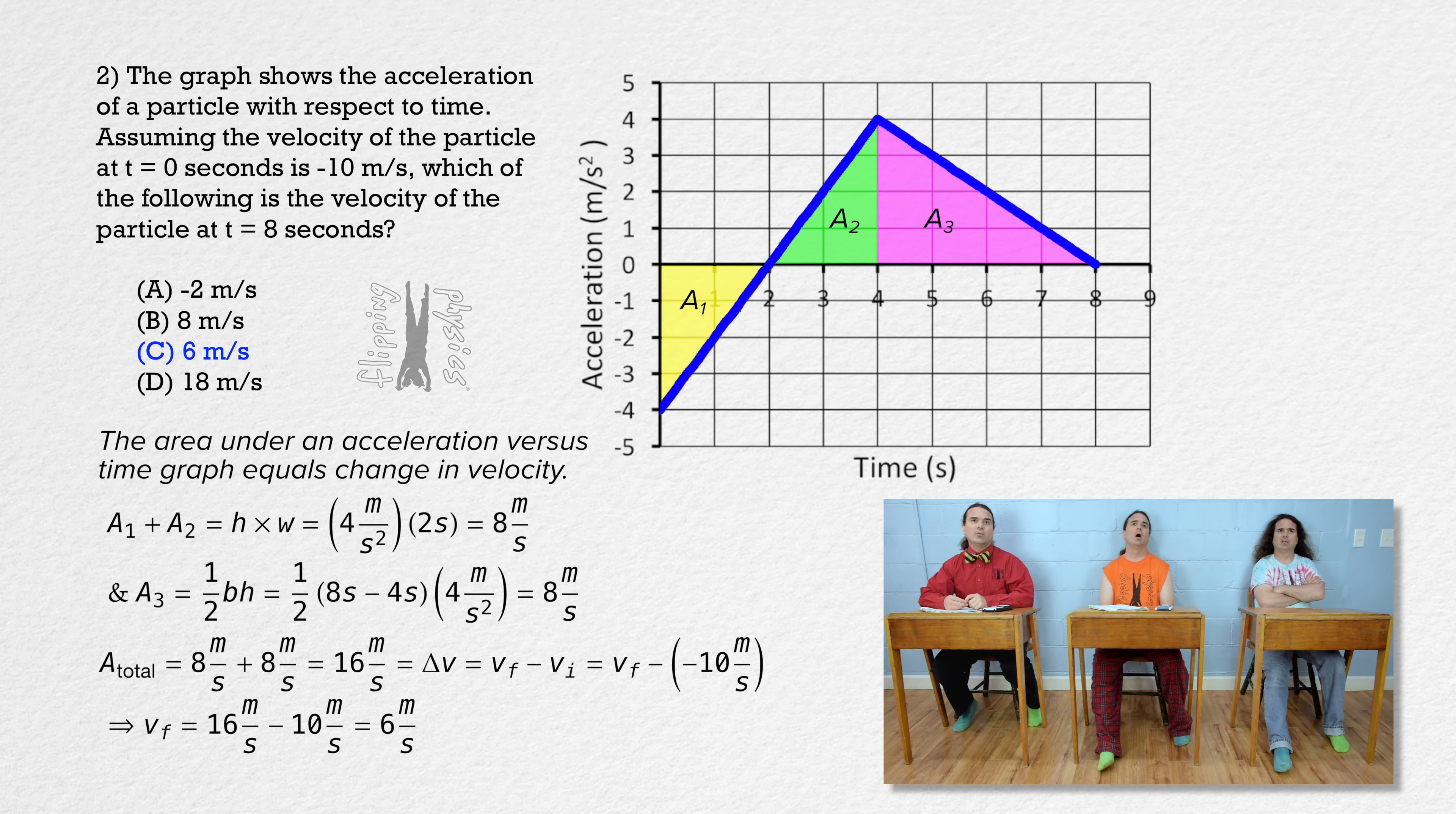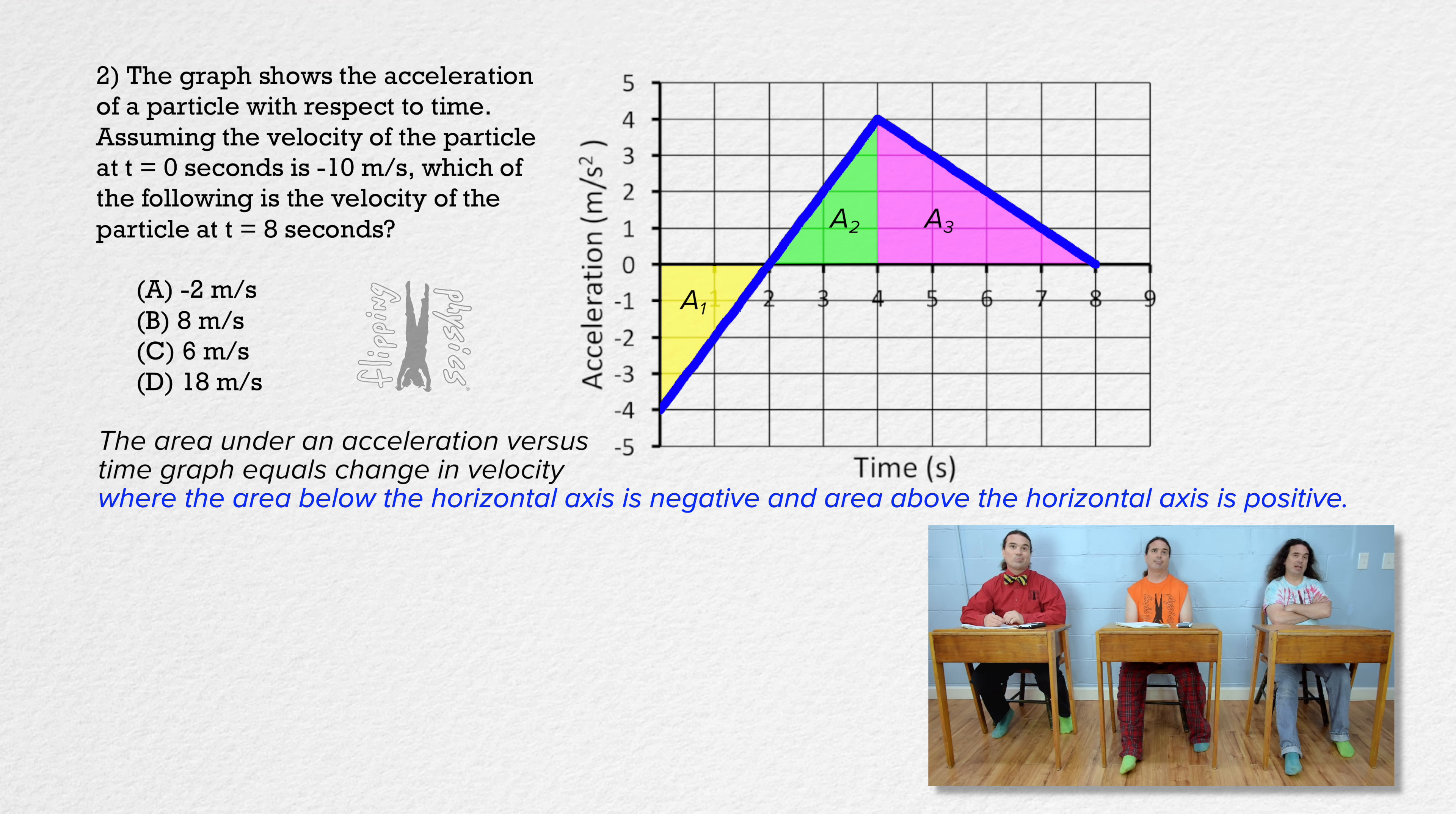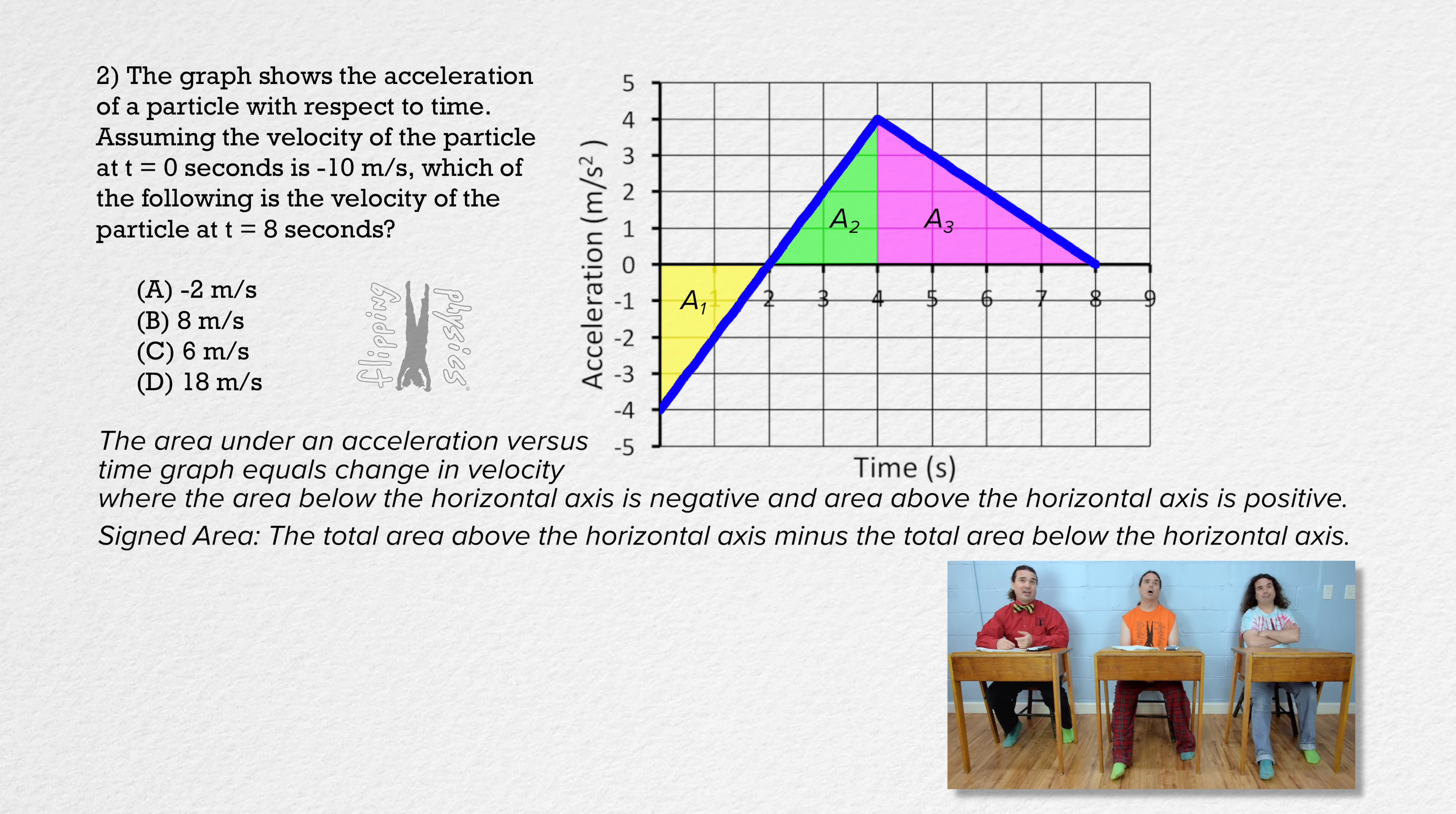Wait. Remember, it is the area under the curve. Under. I forgot that area below the horizontal axis is negative and area above the horizontal axis is positive. Technically, it is called the signed area, which is the total area above the horizontal axis minus the total area below the horizontal axis. Signed area? Maybe that will help me remember that next time.